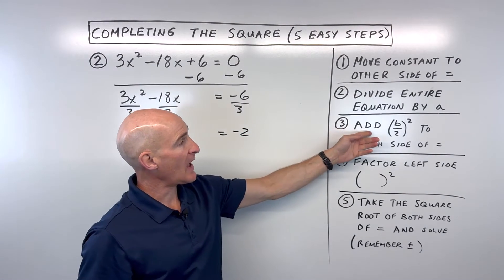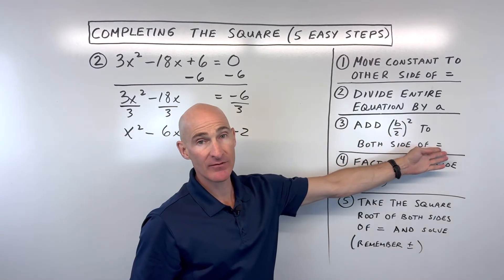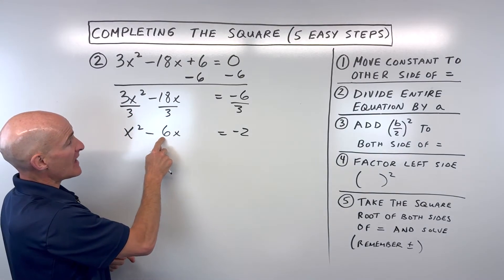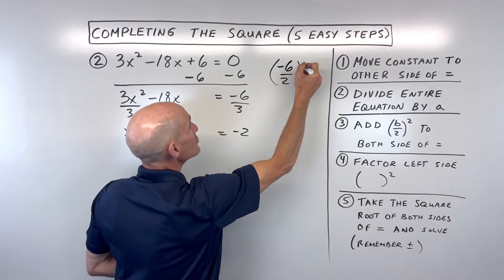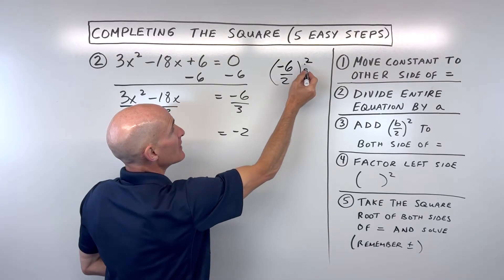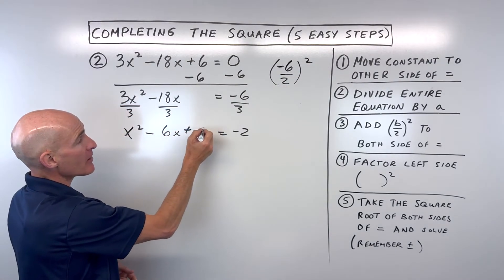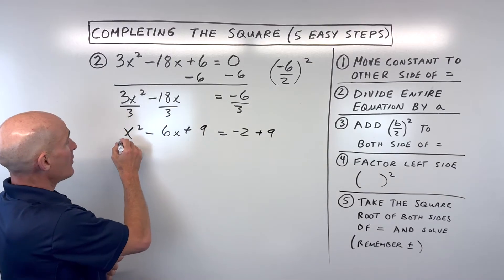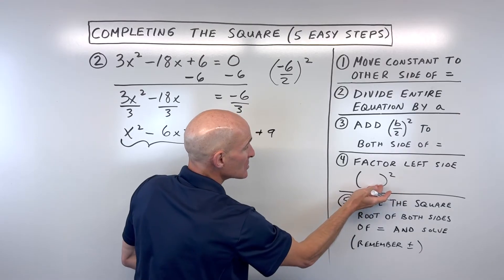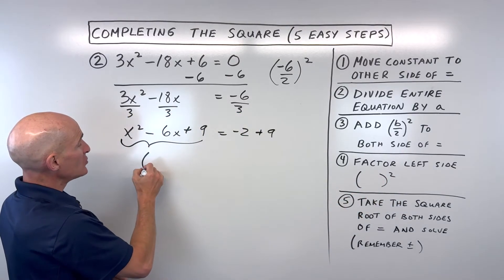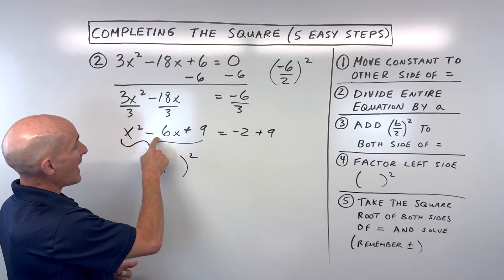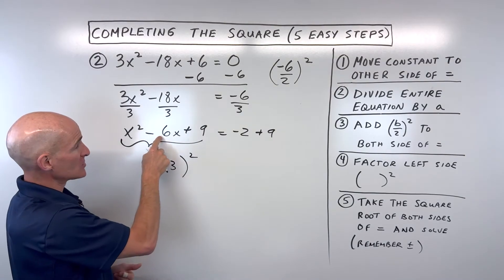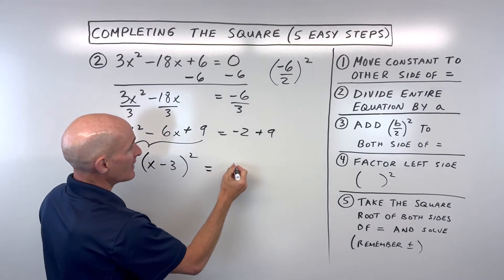Now step three: add b divided by 2, the quantity squared, to both sides. The b value is negative 6. So negative 6 divided by 2 is negative 3, and negative 3 squared is 9. Out of thin air, I'm adding 9 to the left side, and to keep it balanced I'm adding 9 to the right side. Now step four: factor the left side as a binomial squared. You just take half of the b value, so it's x minus 3, the quantity squared. On the right side, that's equal to 7. So now we've completed the square.